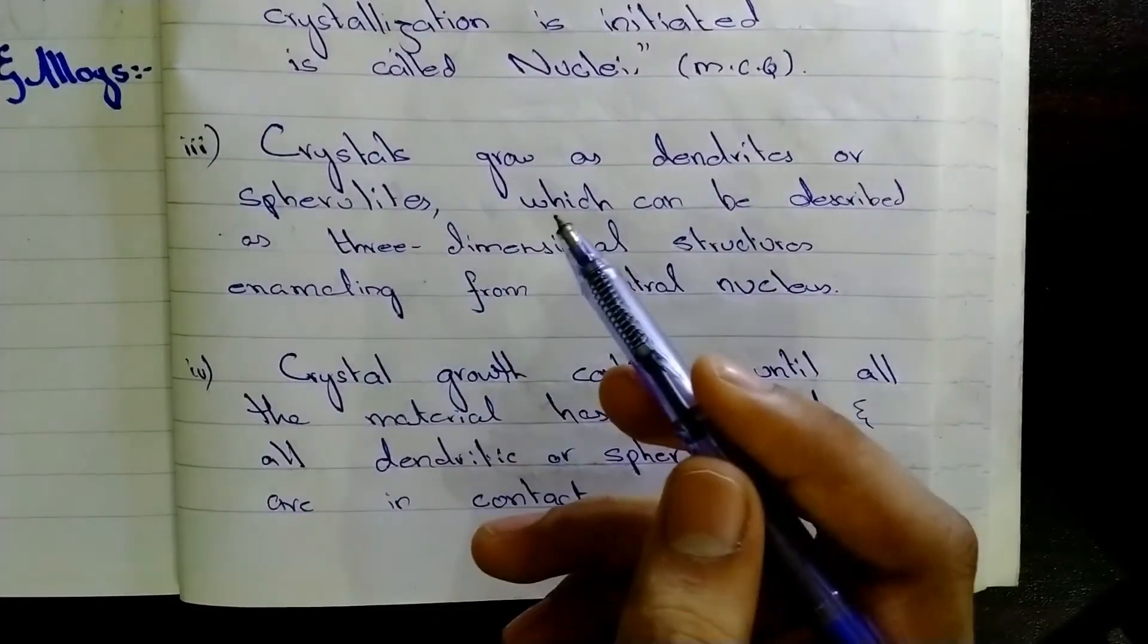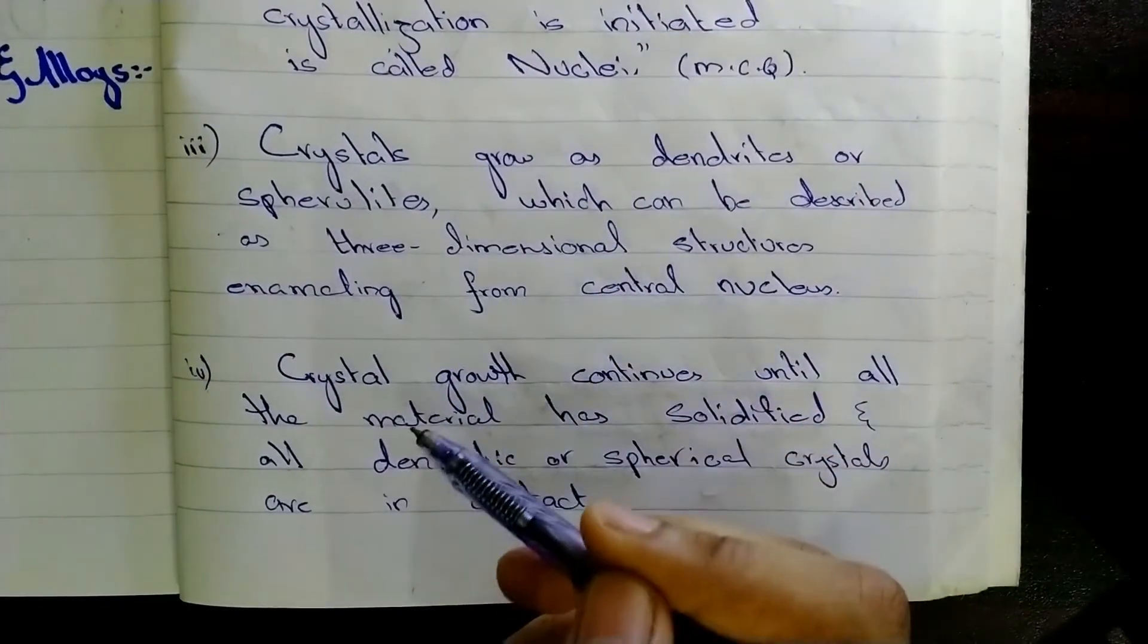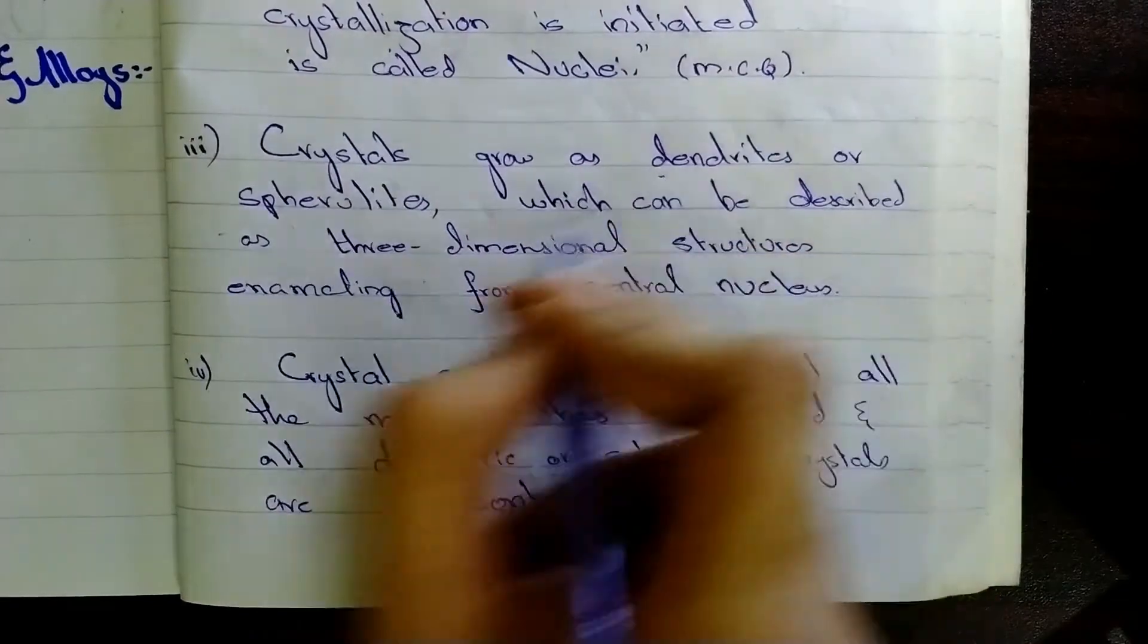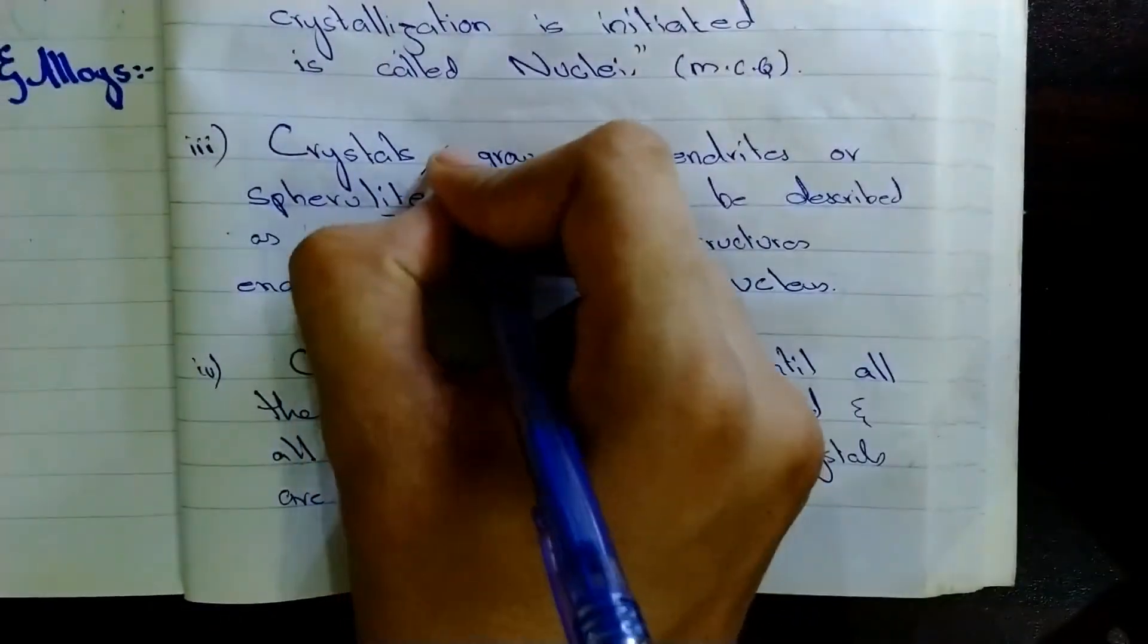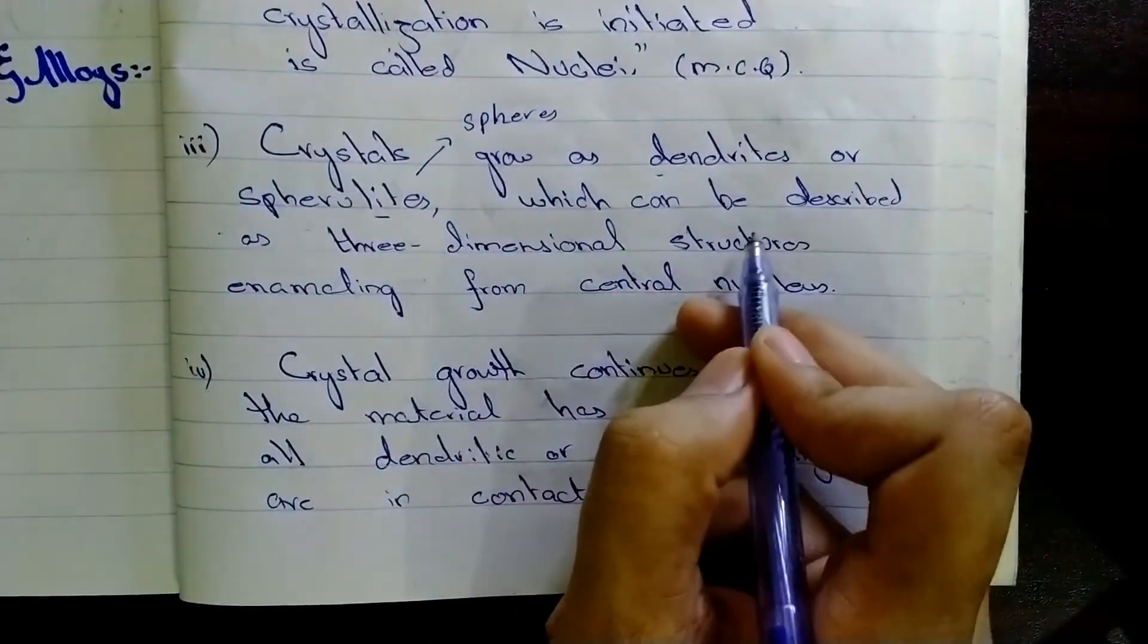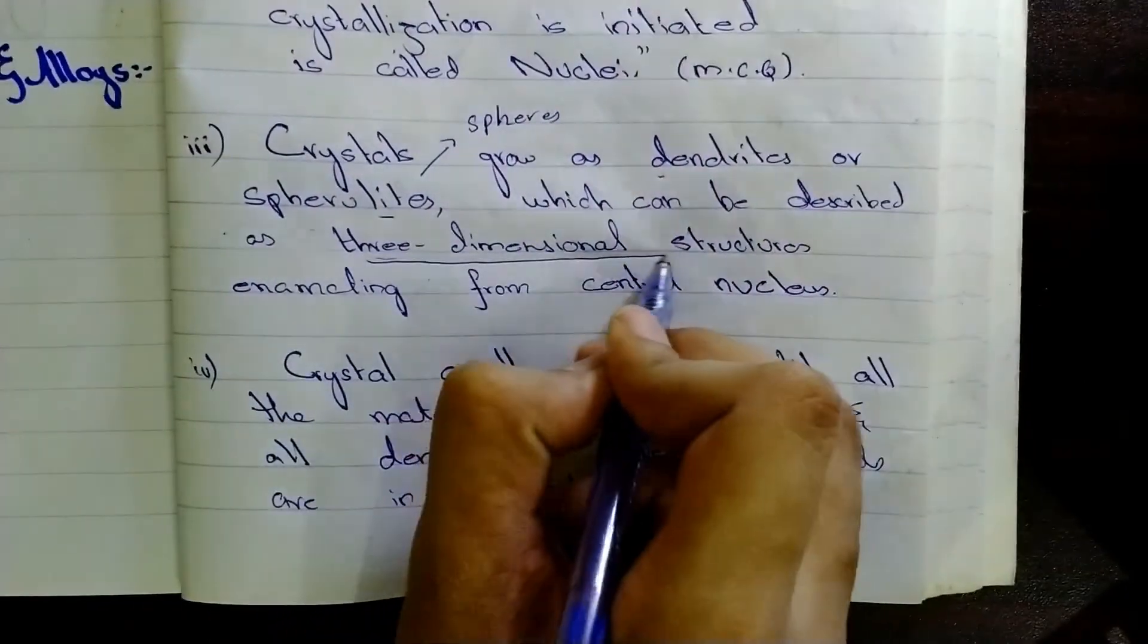Now, we will discuss about the crystal structure of the metals point by point. Firstly, crystals grow as dendrites or spherulites. Spherulites are like spheres. Crystals, which can be described as three-dimensional structure.